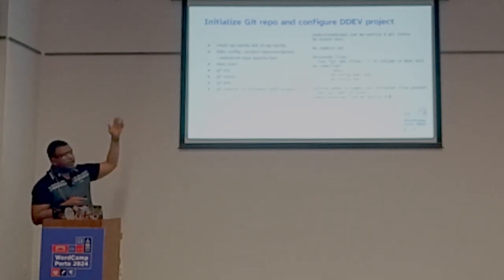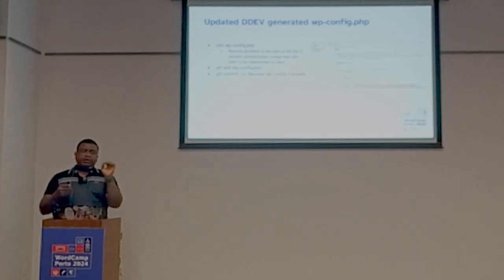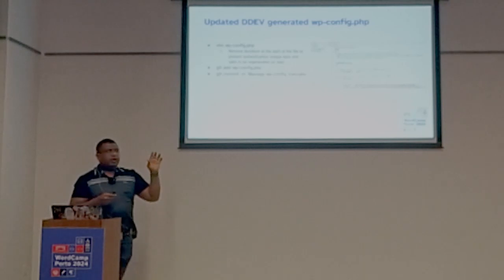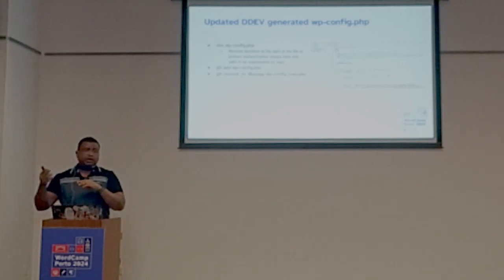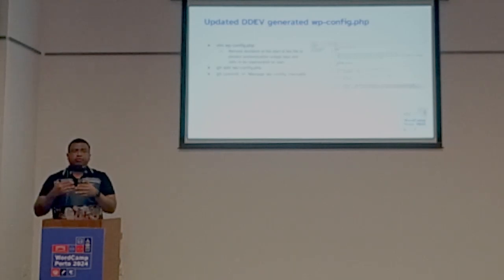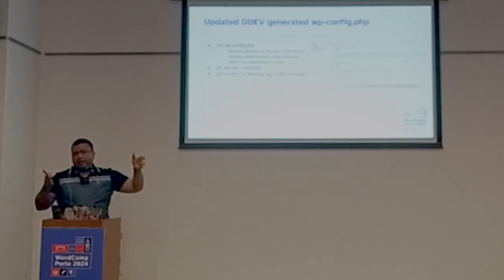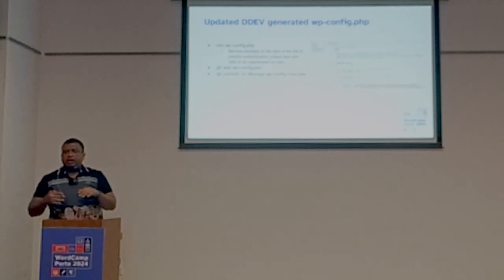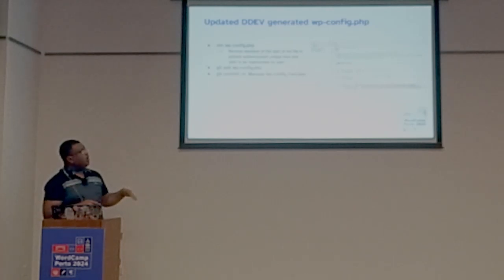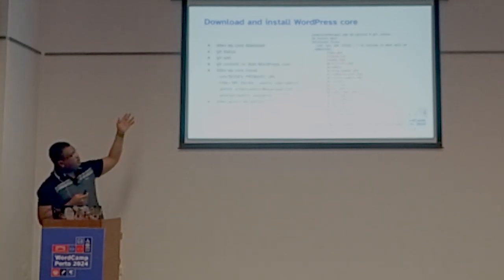I initialize the Git repository and commit everything I have at that moment. One thing specific to Ddev: the wp-config file includes salts and unique keys that are supposed to be randomly generated at the start of your project, but Ddev will regenerate those keys every time you restart the machine. To prevent that, open the file and remove the comment line — that stops it from regenerating keys, keeping your wp-config stable.